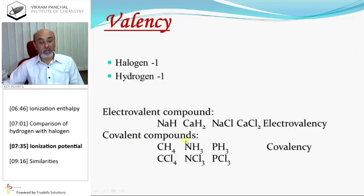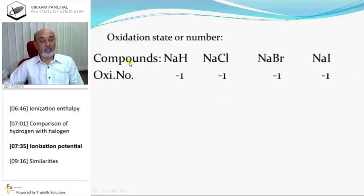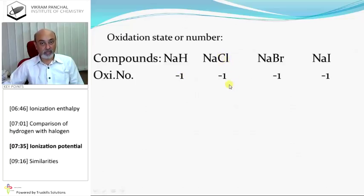Covalent compounds: hydrogen with carbon, nitrogen, and phosphorus forms covalent compounds; halogens also form covalent compounds. Oxidation state: in sodium hydride the oxidation number of hydrogen is minus one; in sodium chloride the oxidation number of chlorine is minus one; in sodium bromide the oxidation number is minus one.